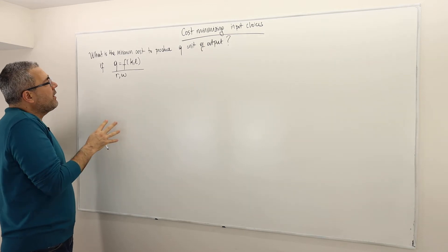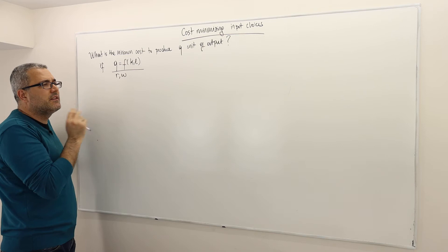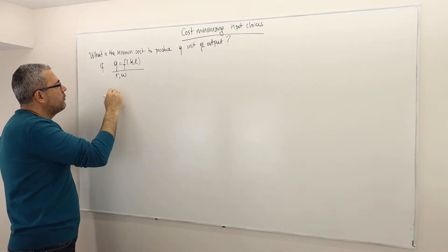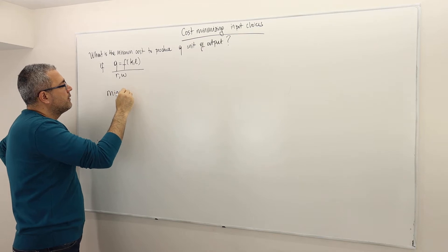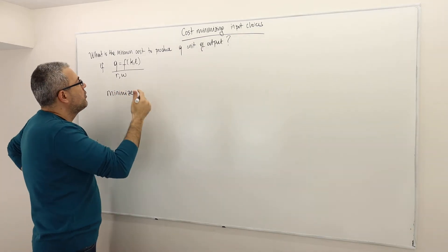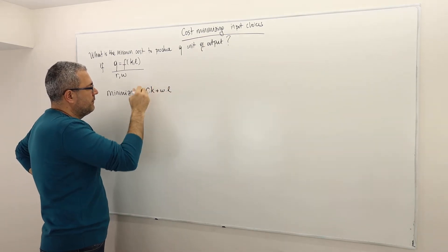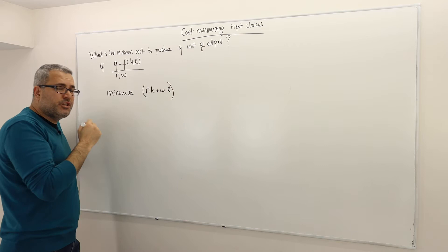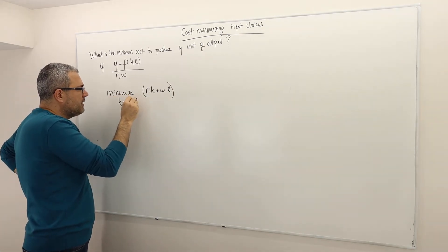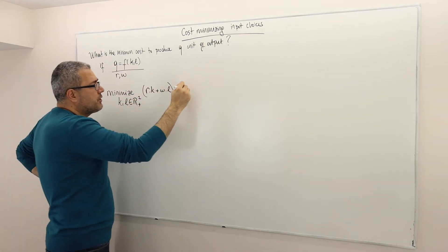So how can we minimize cost to produce Q units of output? Mathematically, the problem is: minimize cost, which is R times capital plus W times L, by choosing K and L — these are the only choice variables we have.